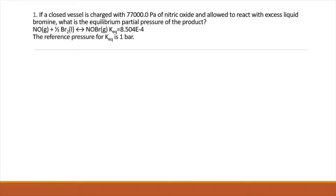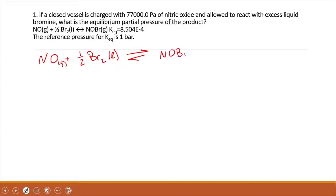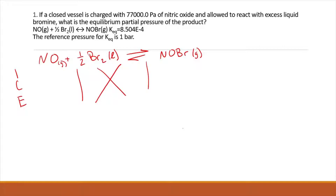Chapter 13 is all about those good old ICE tables, so it's pretty much always a really good spot to start. Let's rewrite this reaction: NO plus one-half Br2, which is liquid, in equilibrium with NOBr. Setting up our table, we are not going to use bromine because it is a liquid, so it does not count. Initially, we do not have any NOBr.